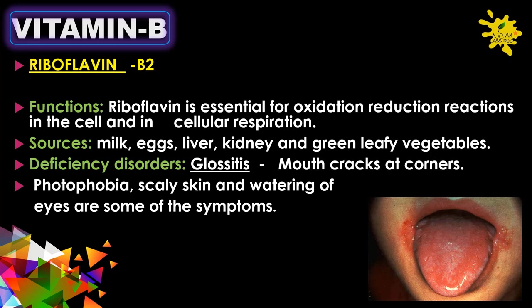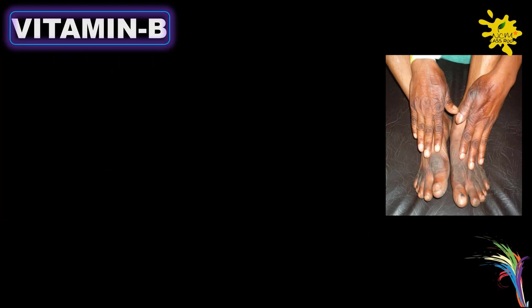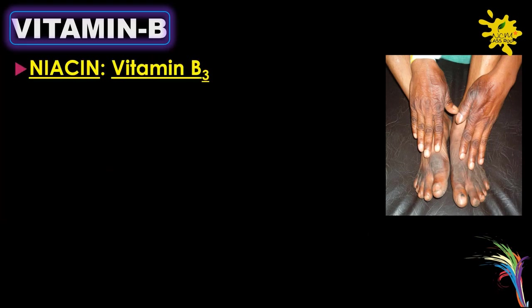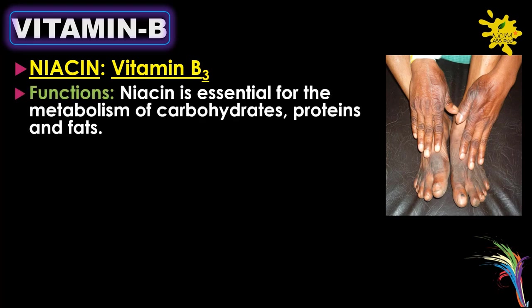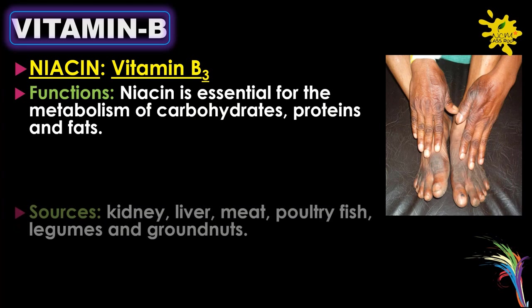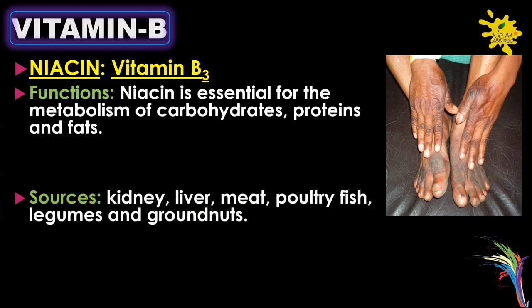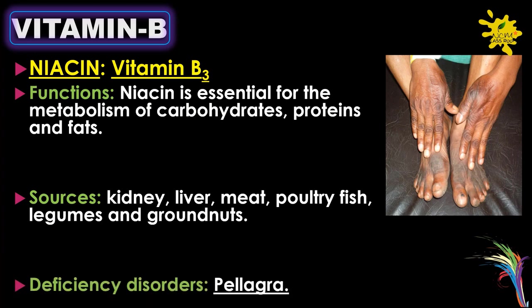Vitamin B3 is known as niacin. Niacin is essential for the metabolism of carbohydrates, proteins, and fats. Sources include kidney, liver, meat, poultry, fish, legumes, and groundnuts.